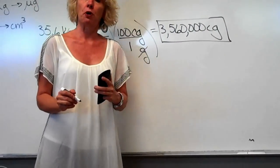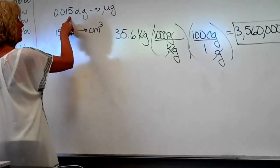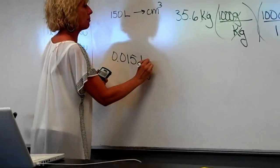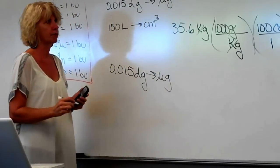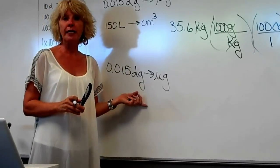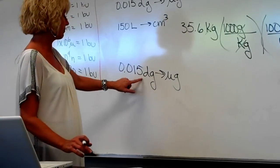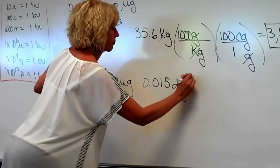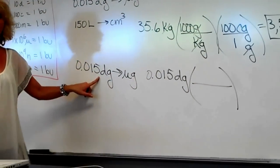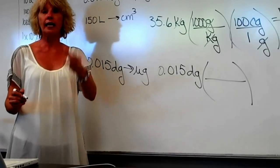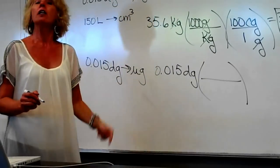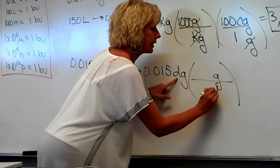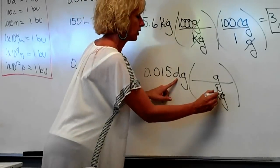Let's do one more problem: 0.015 decigrams to micrograms. To solve any problem in chemistry, the first thing we're going to write down is the given, which is 0.015 decigrams. Again, I don't expect you to memorize decigrams to something other than the basic unit, so let's take it to the basic unit. Grams goes on top and decigrams goes on the bottom so they cancel out.